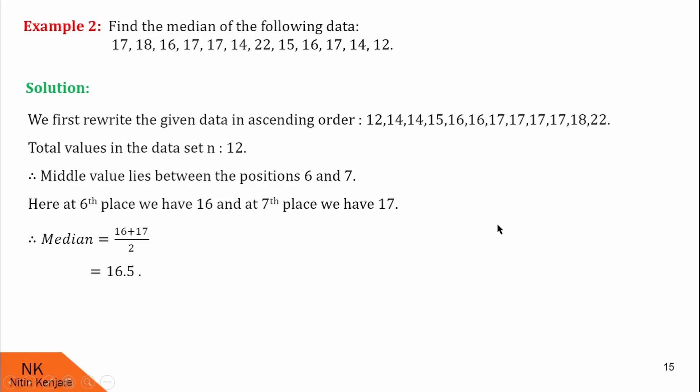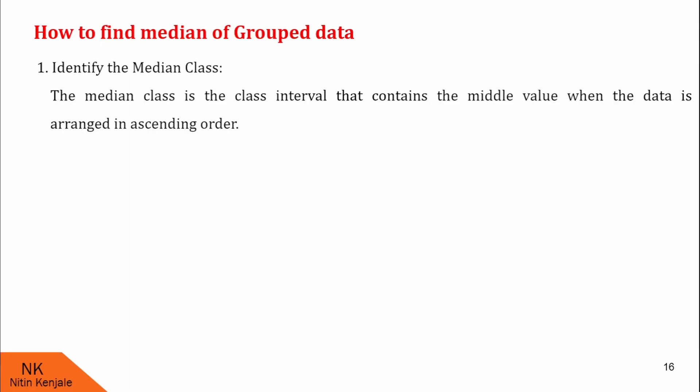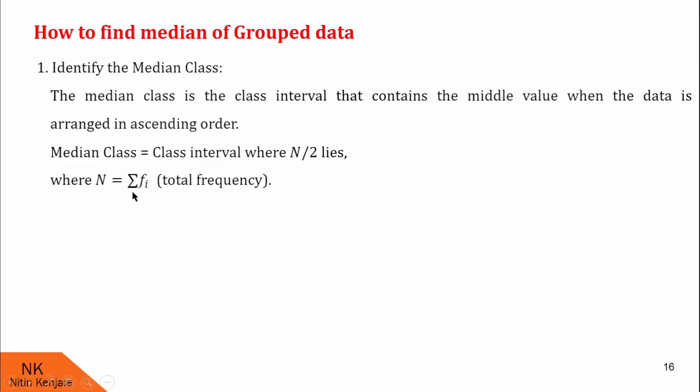Now let us proceed to see how to find the median of grouped data. In step 1, we identify the median class. The median class is the class interval that contains the middle value when the data is arranged in ascending order. Therefore, the median class is the class interval where n by 2 values lie, where n is equal to the summation of fi, that is the total frequency.